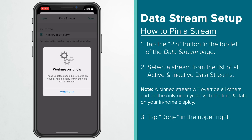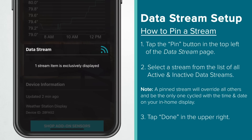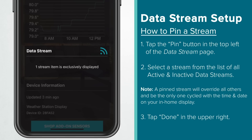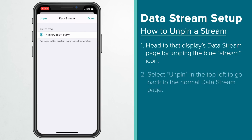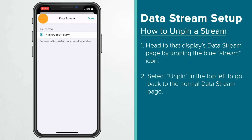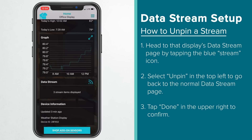This will bring up a message letting you know that your adjustments have been saved and will update on your display shortly. After doing this, you should also notice that the data stream section on this device page now lists the number of active streams. In our case, since we have a stream pinned, it notes that we have one item exclusively displayed. To unpin a stream, tap the blue stream icon again and then unpin in the top left. This will bring you back to your normal data stream page and set your display to go back to your previous active stream setup.